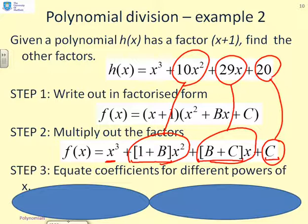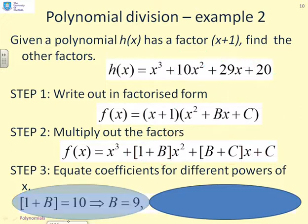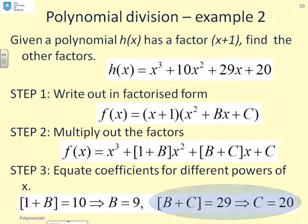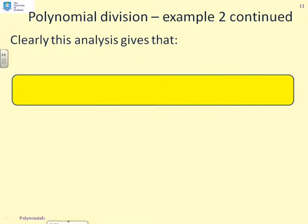Well, although I'm doing this backwards, you can see straight away c must be 20. But we'll do it from left to right, because that's how these slides work. So first of all, 1 + b = 10 tells me that b must be 9. b + c = 29 tells me that c = 20, which we'd already determined from the last equation anyway. Right, having got b and c, I can now write out my factorized polynomial as (x+1)(x² + 9x + 20).